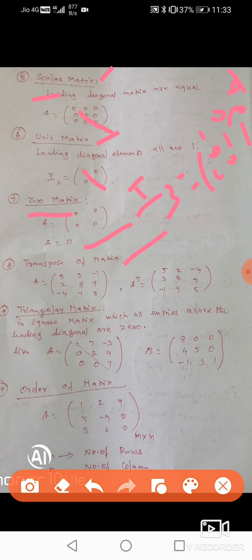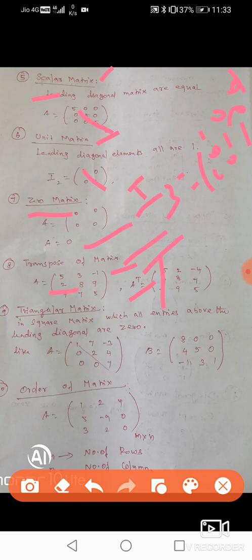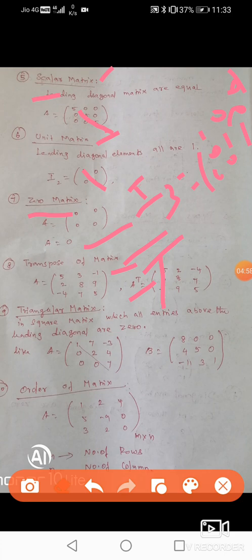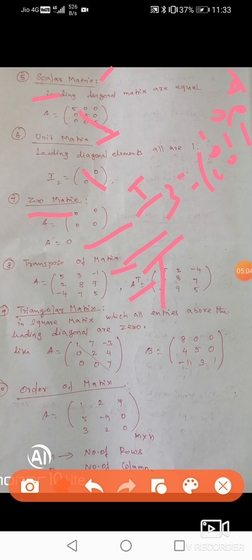Transpose of a matrix: interchanging rows to columns or columns to rows. For example, if A = [5, 3, -1; 2, 8, 9; -4, 7, 5], then A transpose has the first row [5, 3, -1] becoming the first column, and the second row [2, 8, 9] becoming the second column.